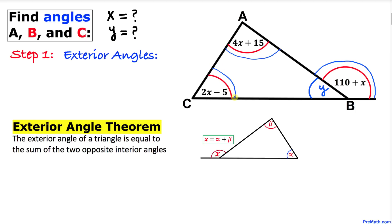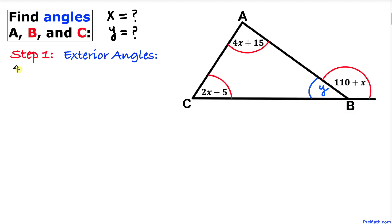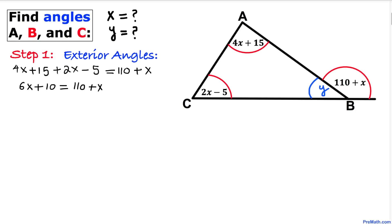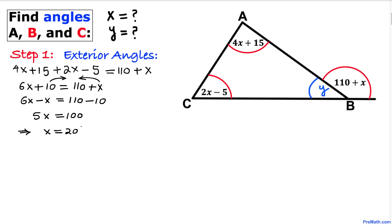So we can write: 4x plus 15 plus 2x minus 5 equals 110 plus x. Simplifying the left-hand side gives 6x plus 10 equals 110 plus x. Moving x to the left and 10 to the right: 6x minus x equals 110 minus 10, so 5x equals 100, which means x equals 20.